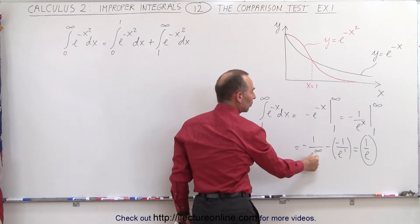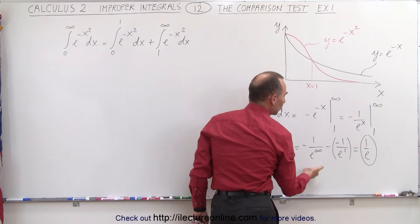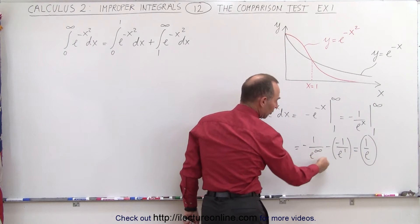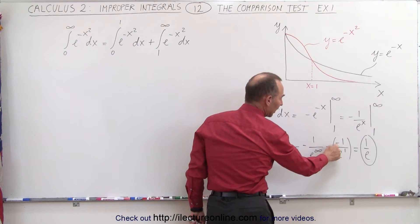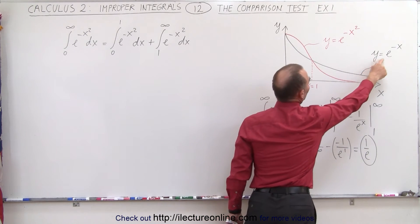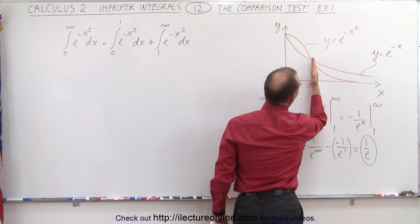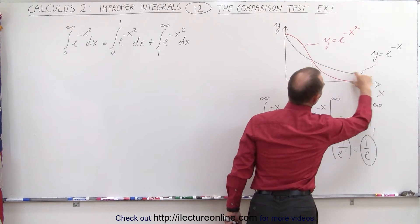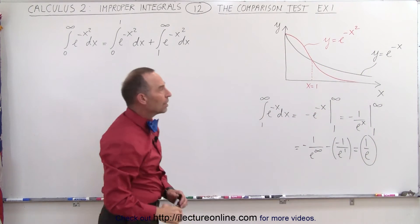We plug in the upper limit, we plug in the lower limit. When we subtract, notice that this goes to 0 and the negative cancels out the negative, so we get 1 over e. That means the function y equals e to the minus x integrated from x equals 1 to infinity, the area underneath the curve equals 1 over e.